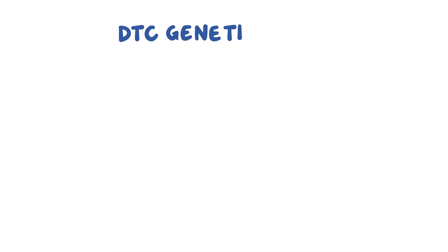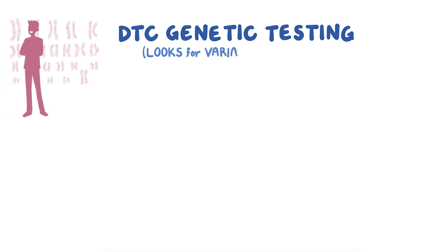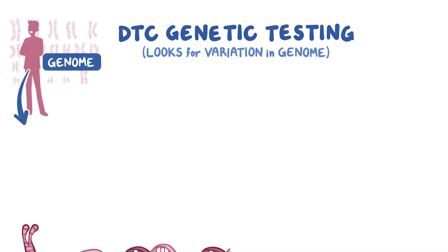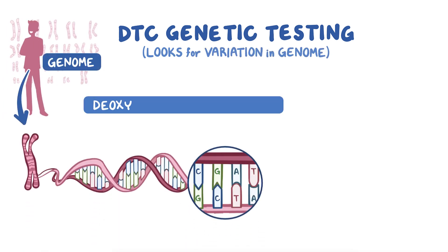Like other genetic tests, direct-to-consumer, abbreviated DTC genetic testing, looks for variation in a person's genome, which consists of deoxyribonucleic acid, or DNA, and is organized into genes.